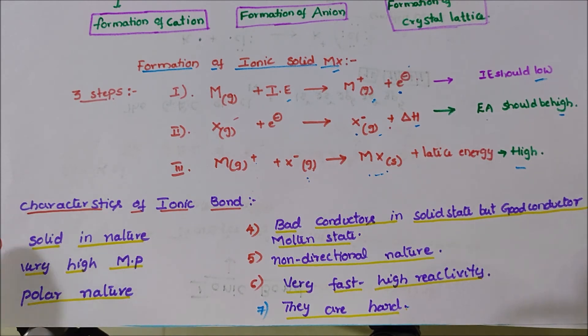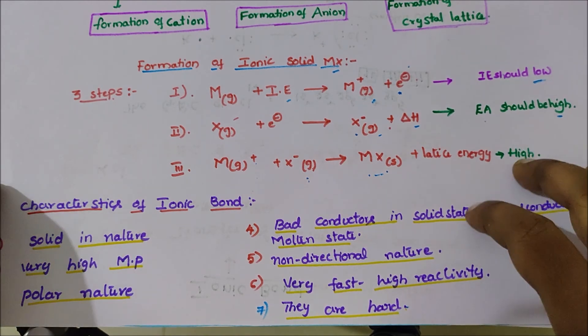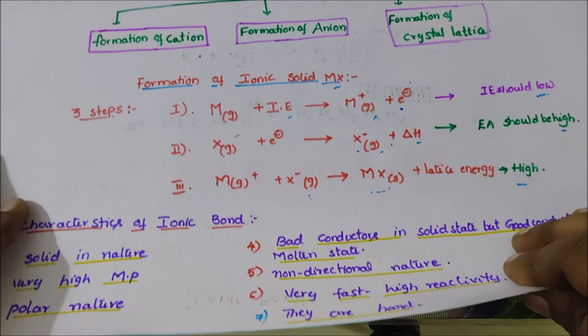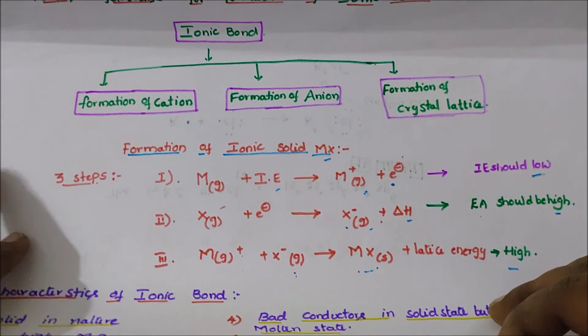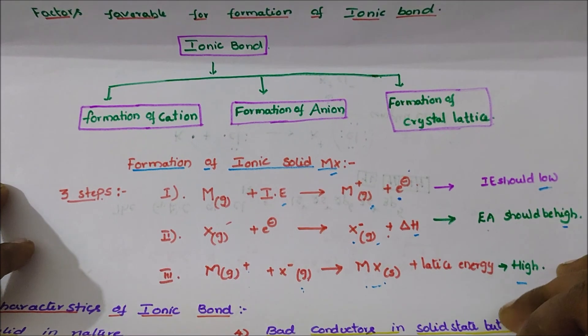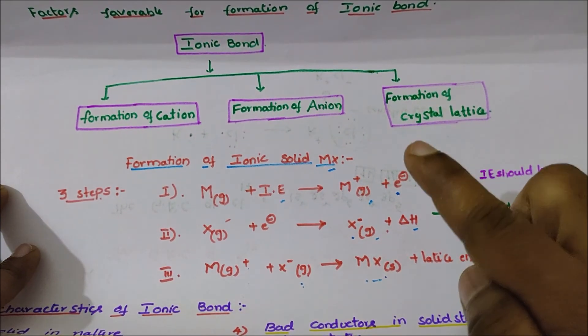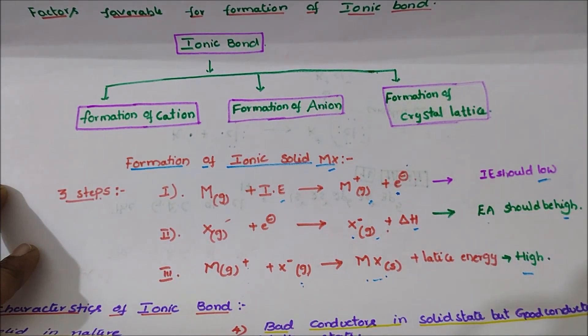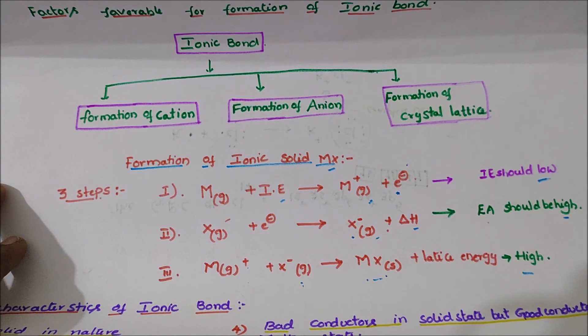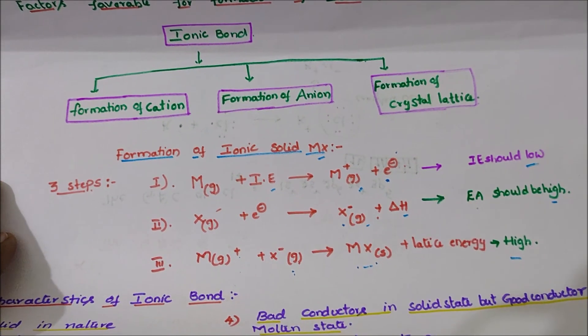The favorable conditions for ionic bond formation are: formation of cation, formation of anion, and formation of crystal lattice.